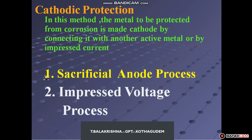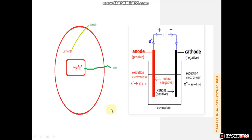In cathodic protection, the metal to be protected from corrosion is made cathode by connecting it with another active metal or by impressed current. We learned the first process in the previous part. The second method is the impressed voltage process, which we will learn now.